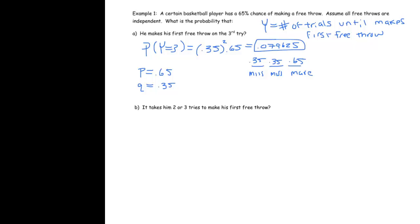Part B says it takes him 2 or 3 tries to make his first free throw. If it takes him 2, that means we want the probability that Y equals 2. But we also want to add to that answer the probability it takes 3 tries.